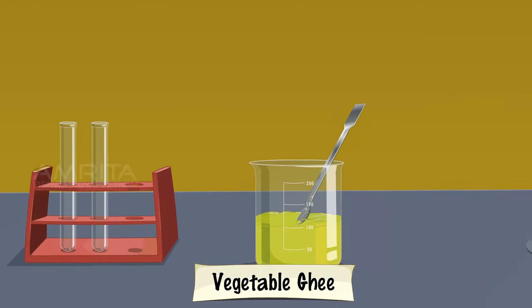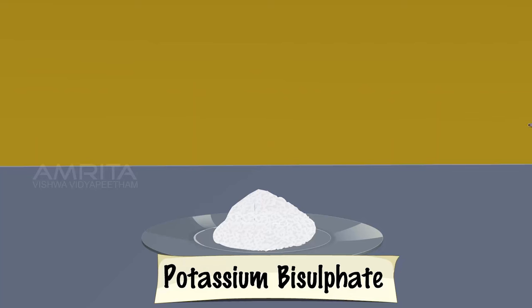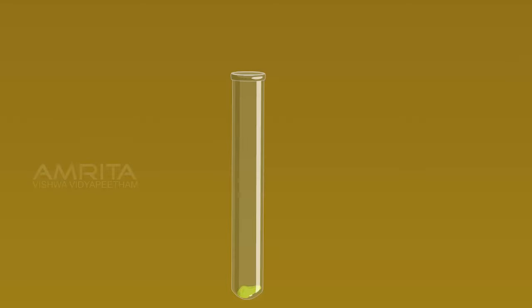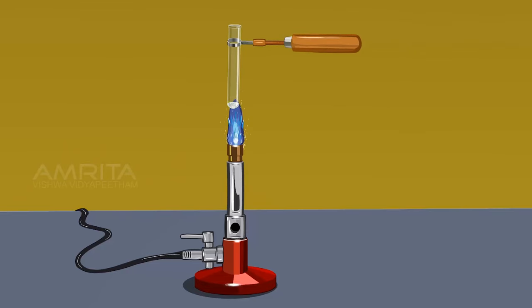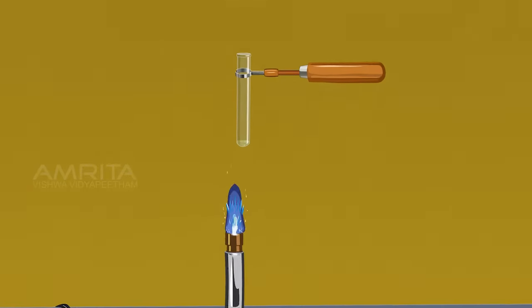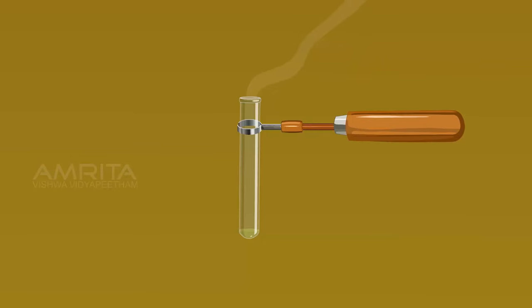Vegetable Ghee. Using a spatula, take a small amount of vegetable ghee in a test tube. Using another spatula, take a small quantity of potassium bisulphate crystals and add them into the test tube. Hold the test tube with the test tube holder and heat it over the Bunsen burner. When fat is heated strongly in the presence of a dehydrating agent like potassium bisulphate, the glycerol portion of the molecule is dehydrated to form an unsaturated aldehyde called acrolein, which has a pungent irritating odour.